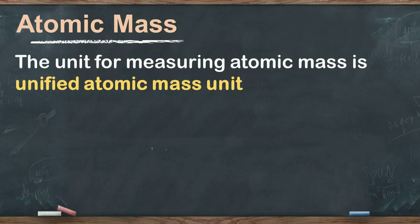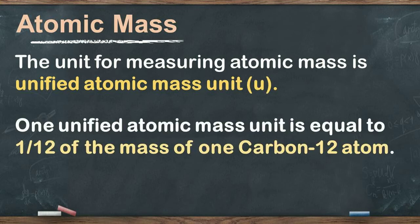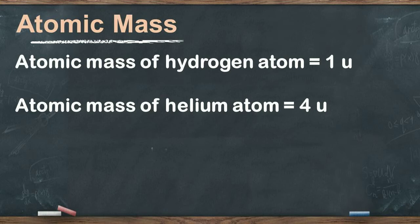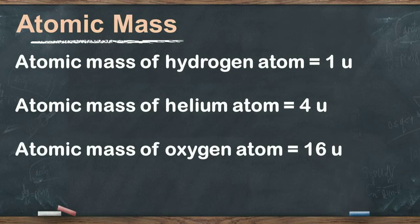The stable isotope of carbon with atomic mass 12 was selected as the standard for comparison, and the unified atomic mass unit was chosen for expressing atomic masses of elements. One unified atomic mass unit is defined as one-twelfth of the mass of one carbon-12 atom. The atomic mass of an element is the number of times one atom of that element is heavier than one-twelfth of the mass of a carbon-12 atom. For example, hydrogen has an atomic mass of 1 u, helium 4 u, and oxygen 16 u.